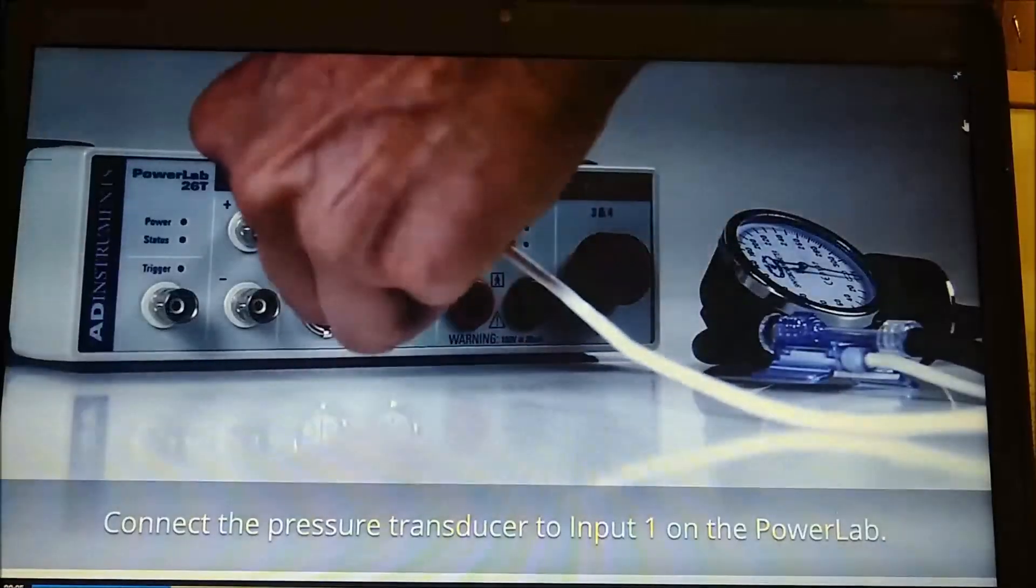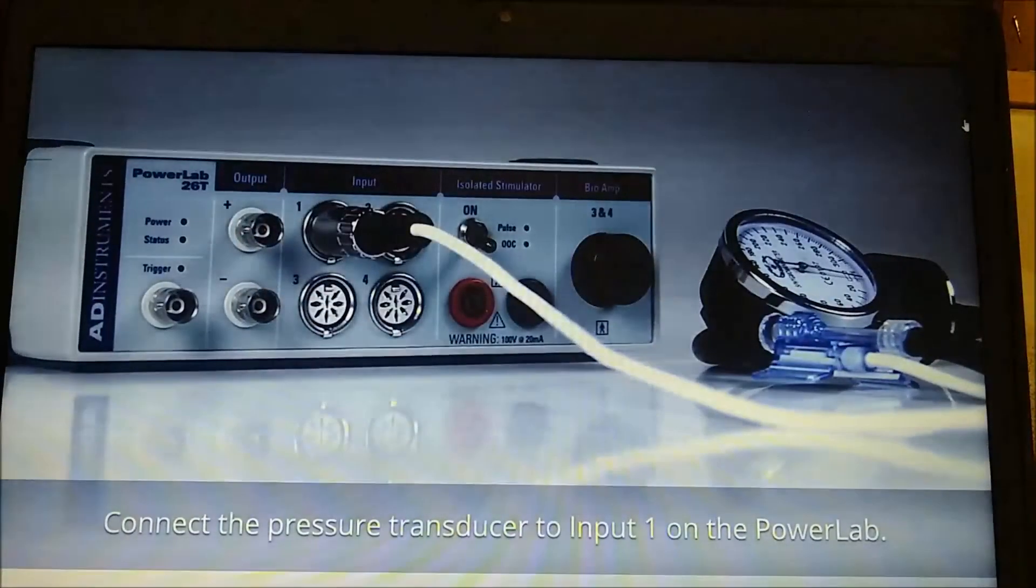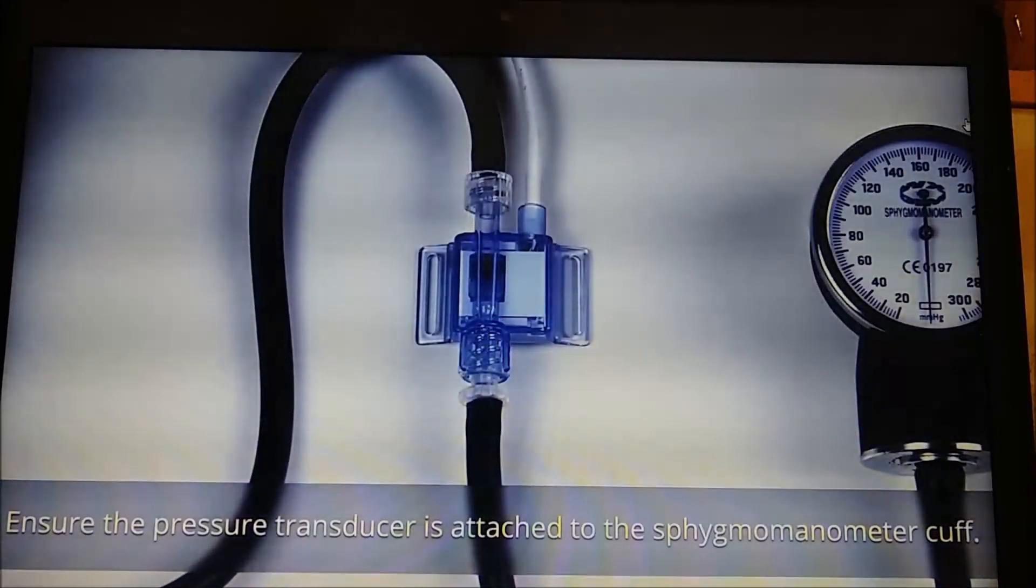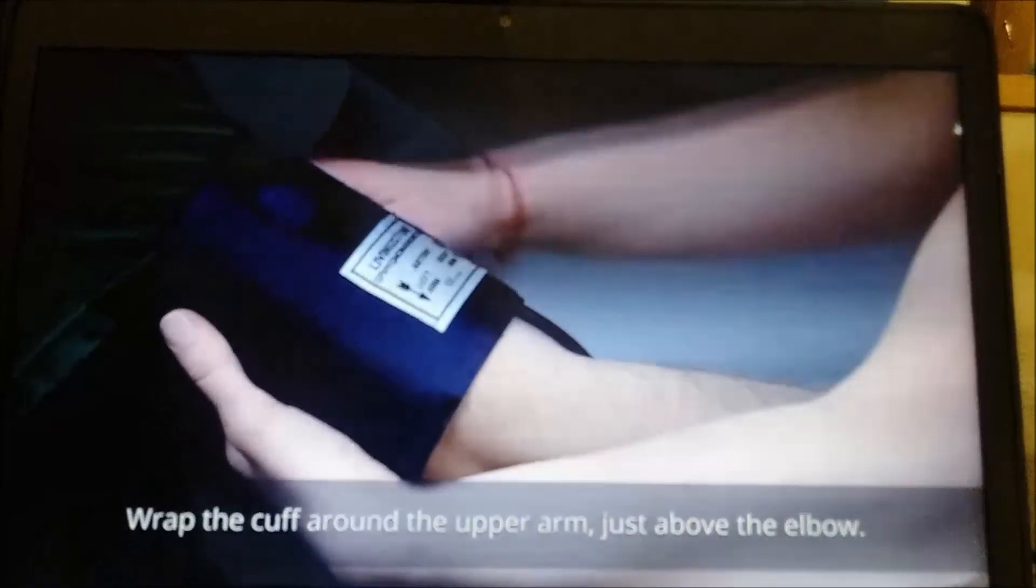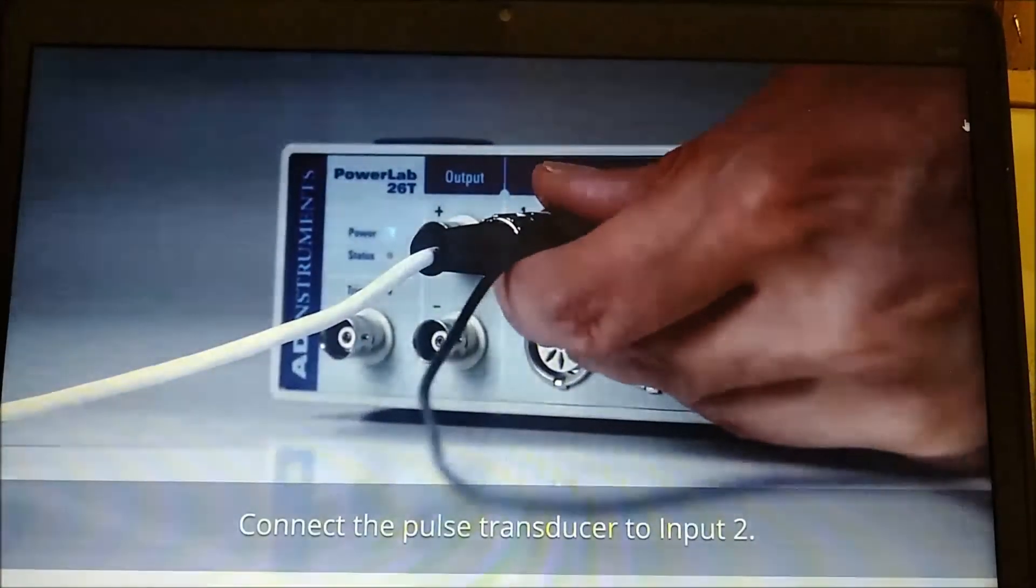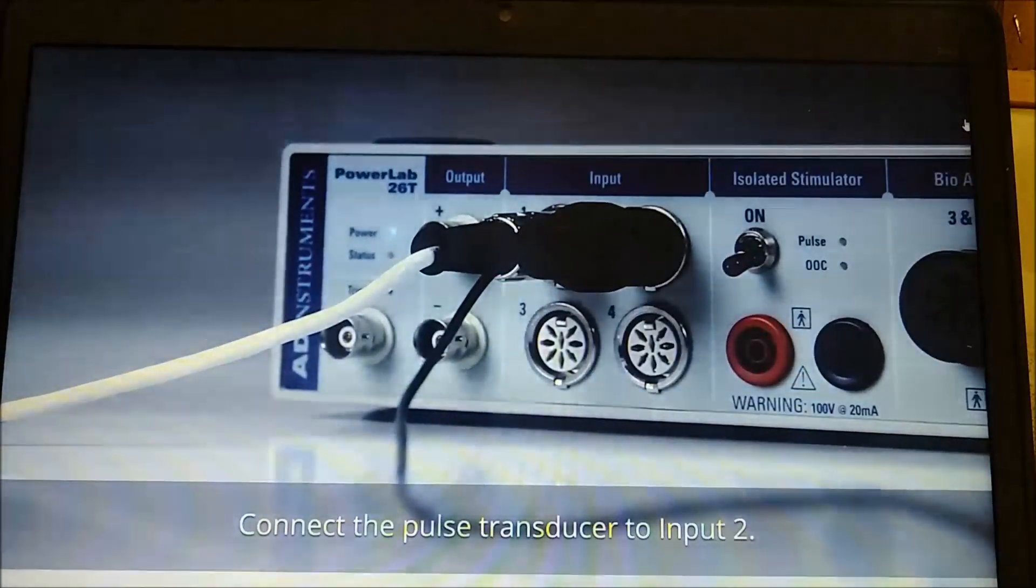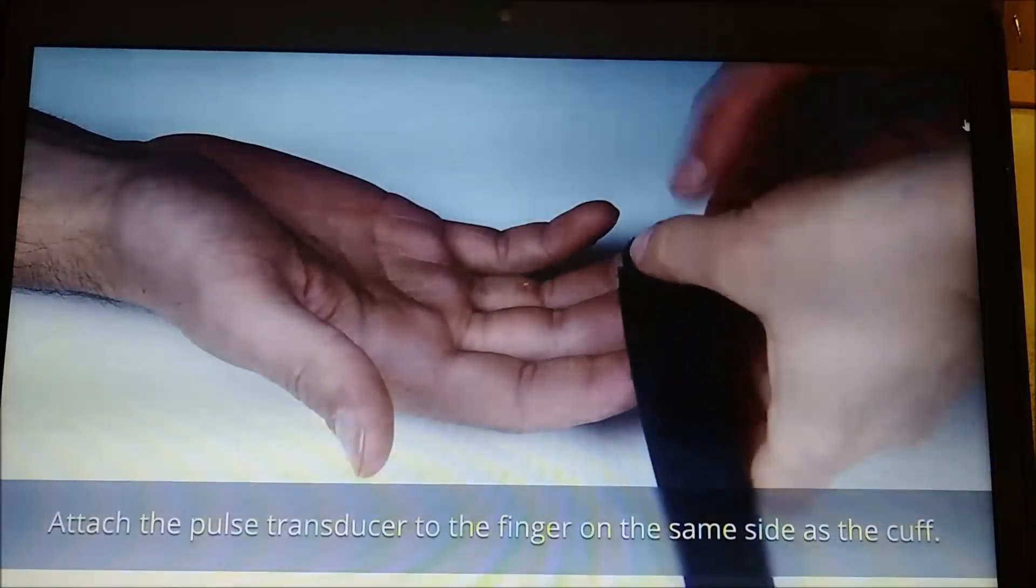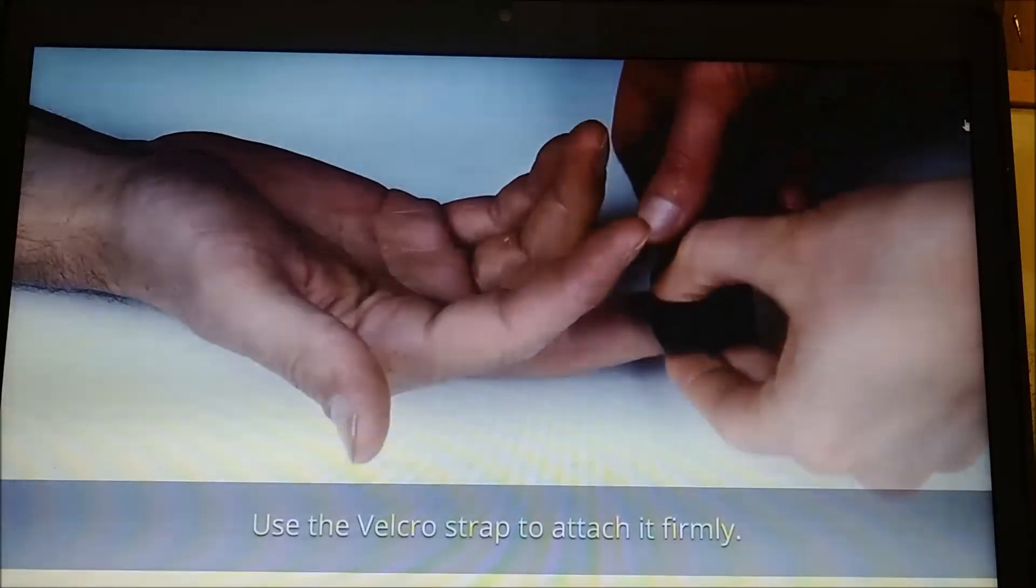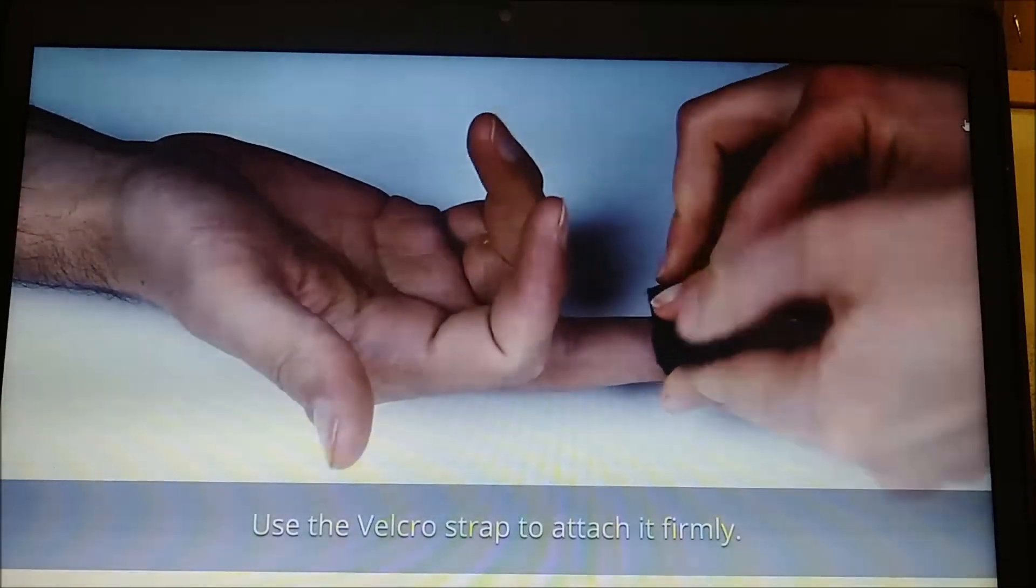Connect the pressure transducer to input 1 on the PowerLab. Ensure the pressure transducer is attached to the sphygmomanometer cuff. Wrap the cuff around the arm just above the elbow. Connect the pulse transducer to input 2. Attach the pulse transducer to the finger on the same side as the cuff. Use the Velcro strap to attach it firmly.